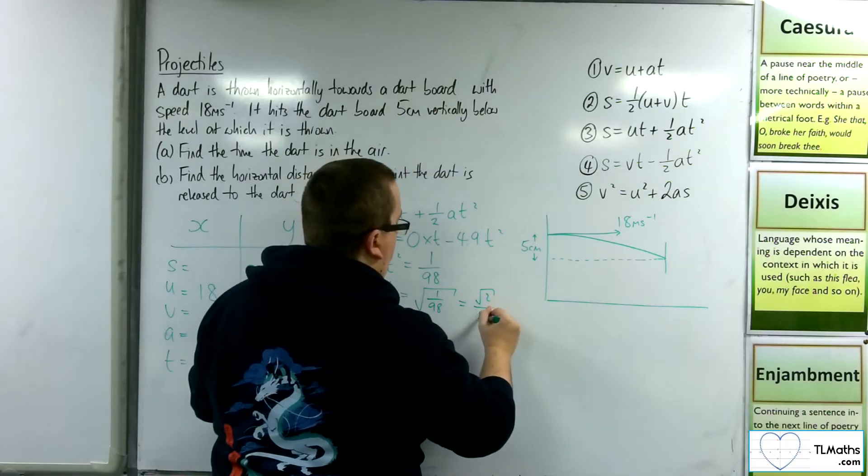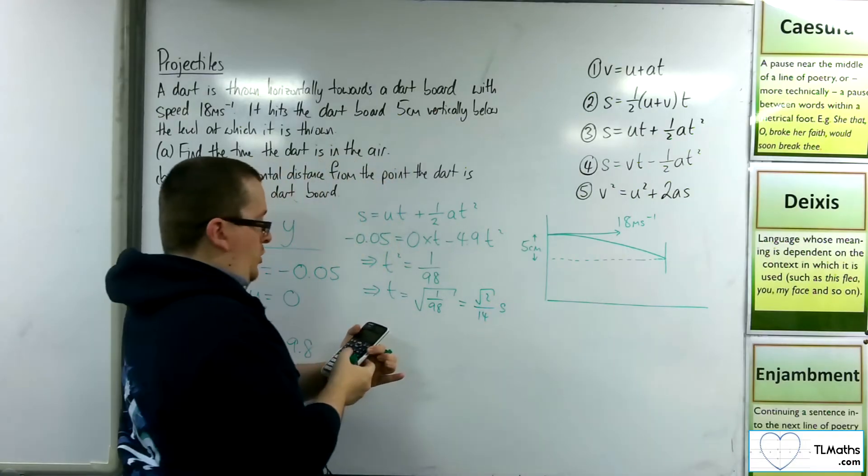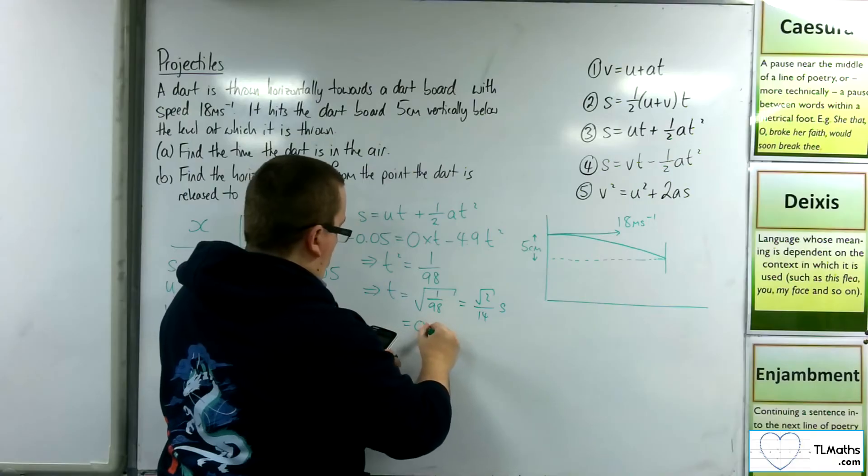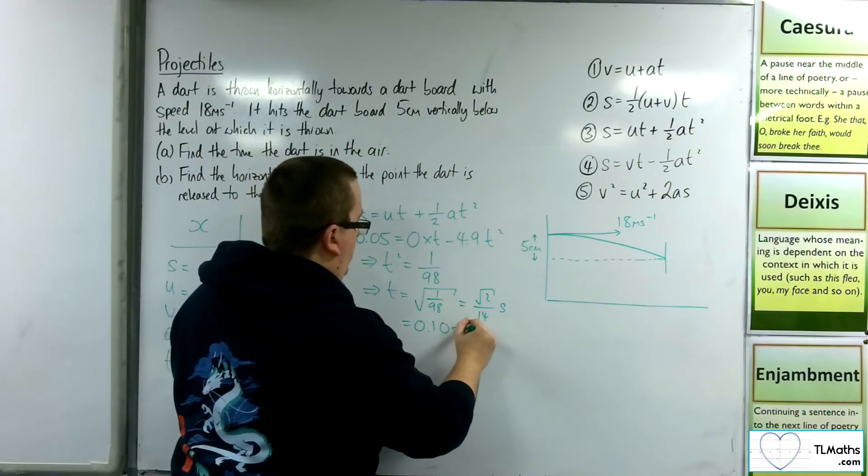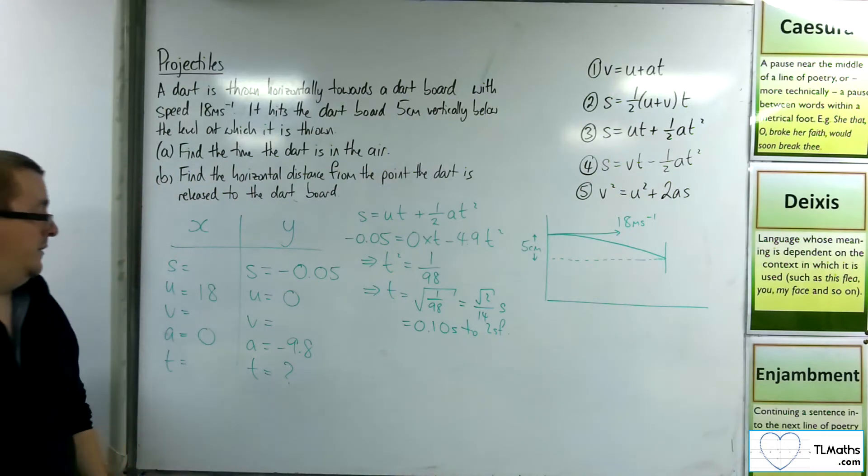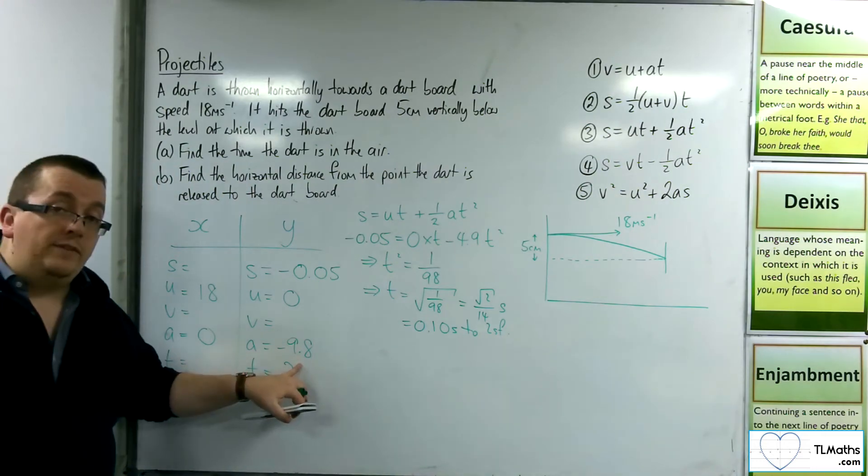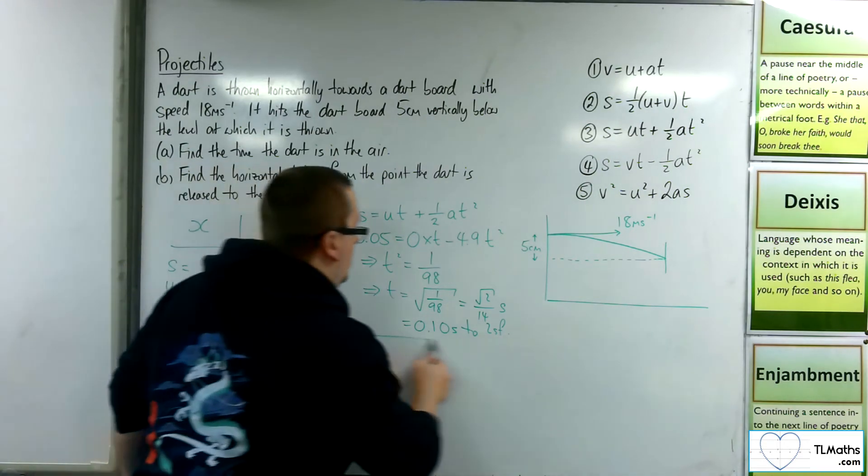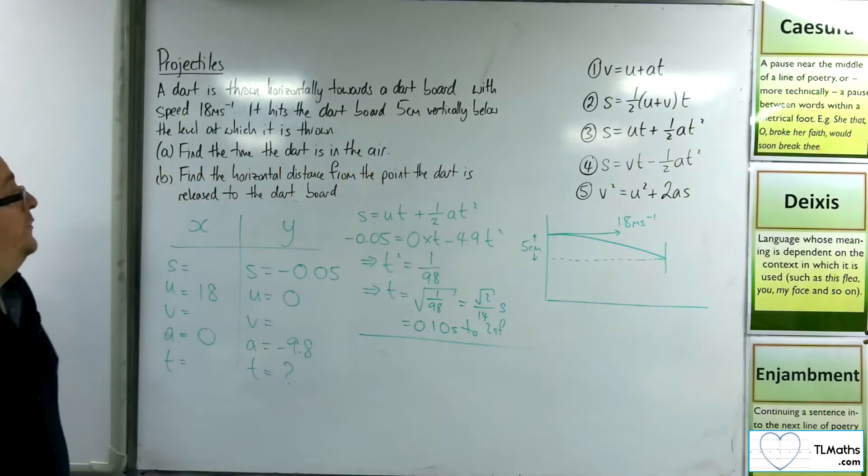So root 2 over 14 seconds, which is 0.10 seconds to two significant figures. Two significant figures because we're working with gravity in two significant figures. So that is my answer for part A.